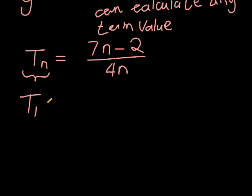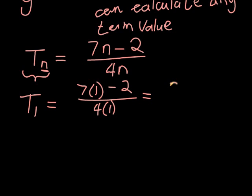For the first term, replace N with 1. So T1 means everywhere there's an N, we use 1. That gives us 7 times 1 minus 2 divided by 4 times 1, which equals 5 over 4.